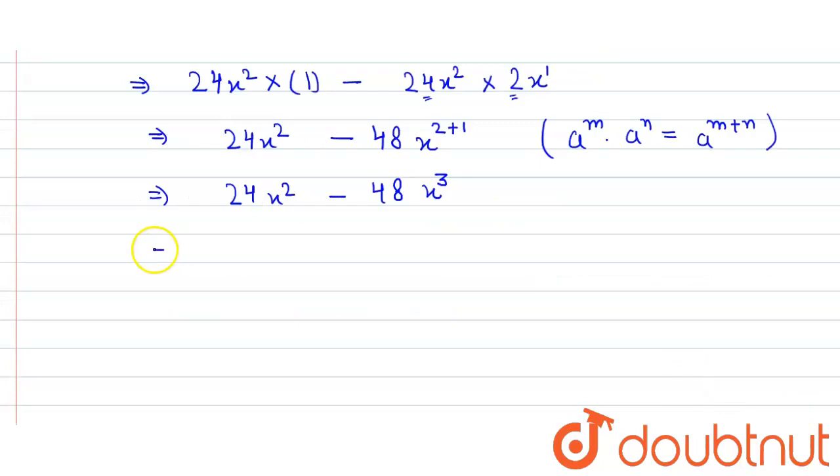So here we simply put the value x to be 3. So it is 24(3²) minus 48(3³).